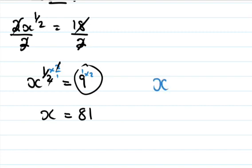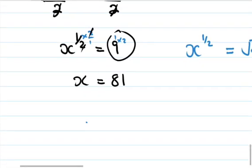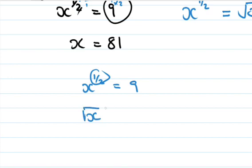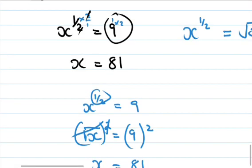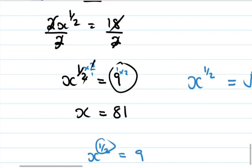We have x to the power half, which is the same as the square root of x, equals 9. To remove the square root, we square both sides: the square of the square root of x equals 9 squared, which gives x equals 81.